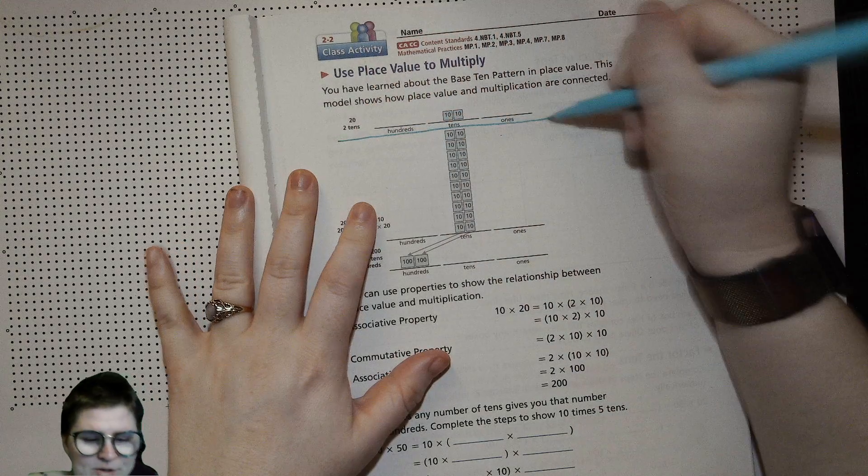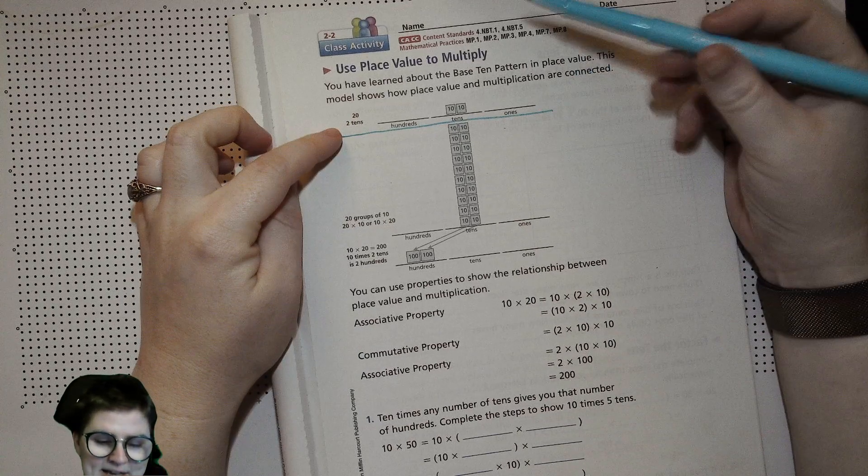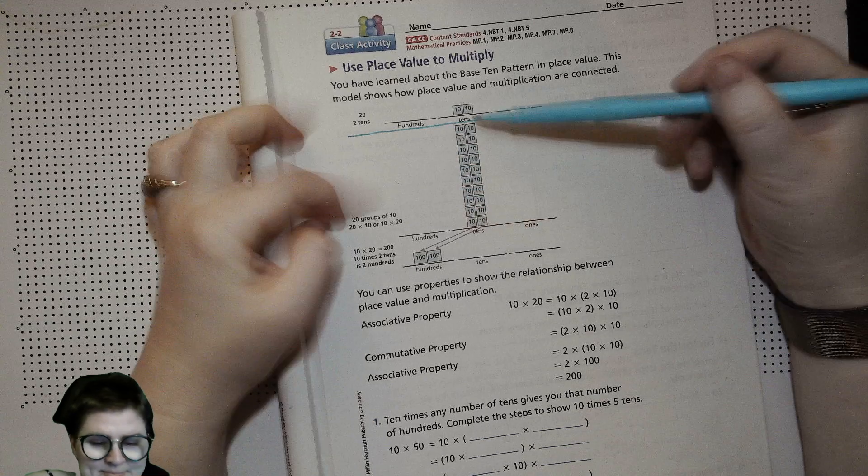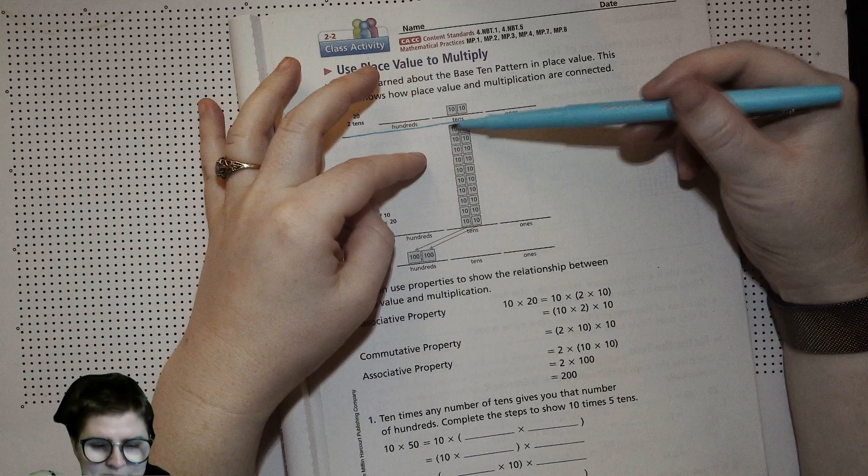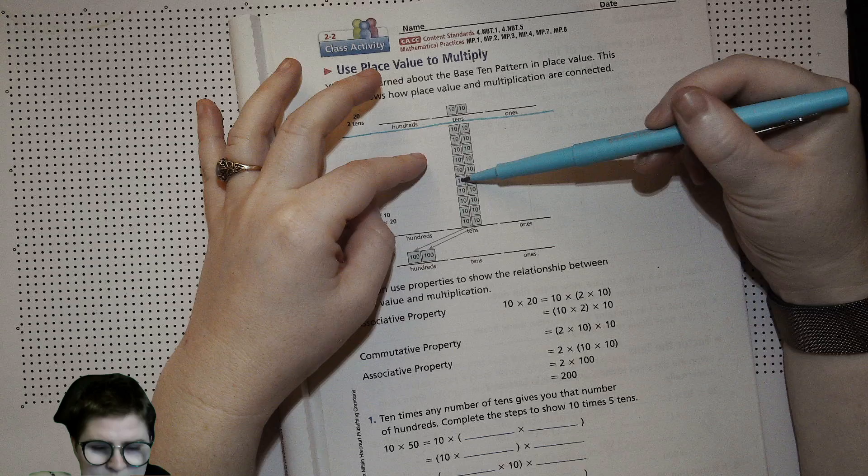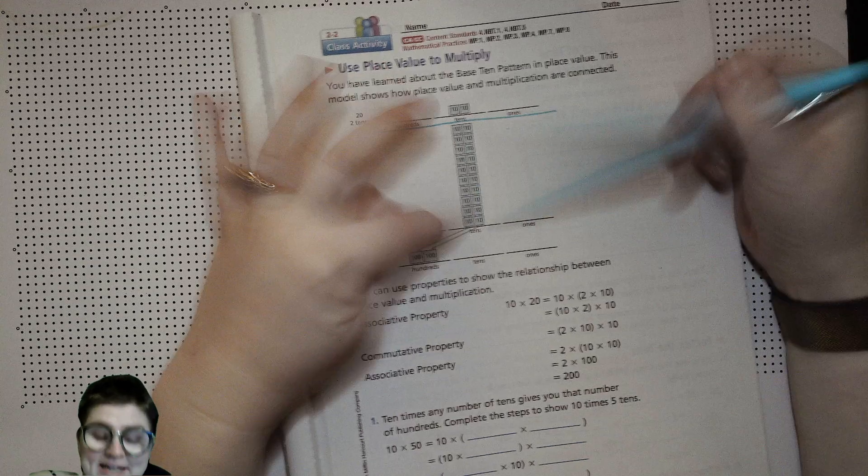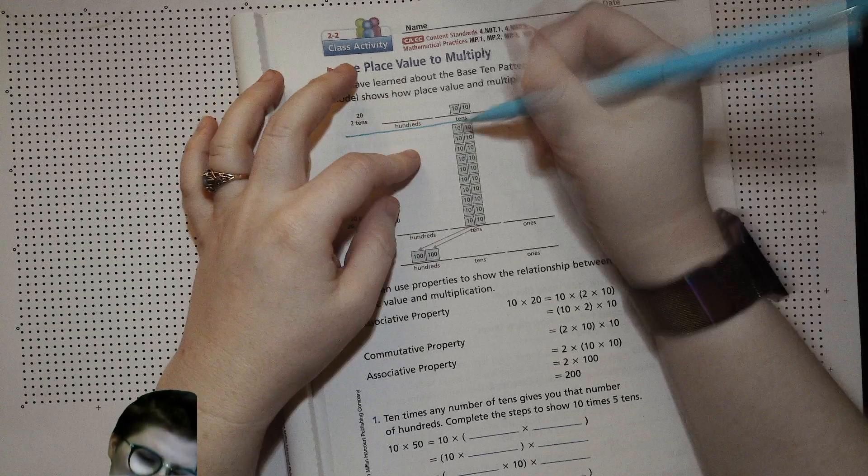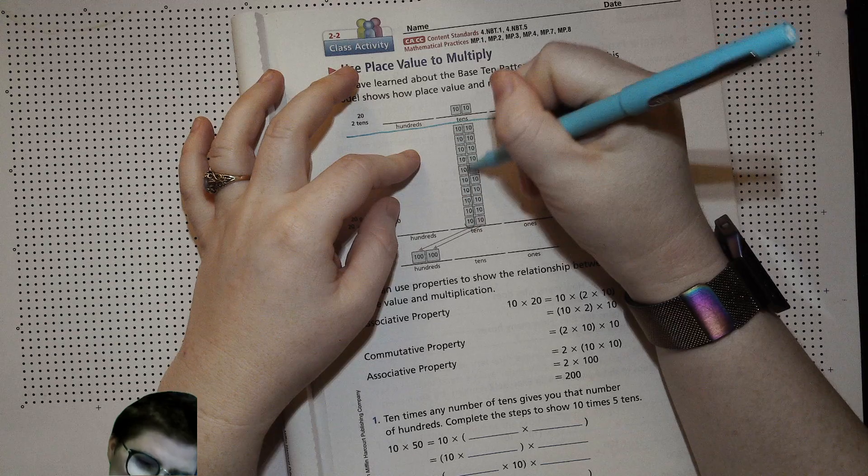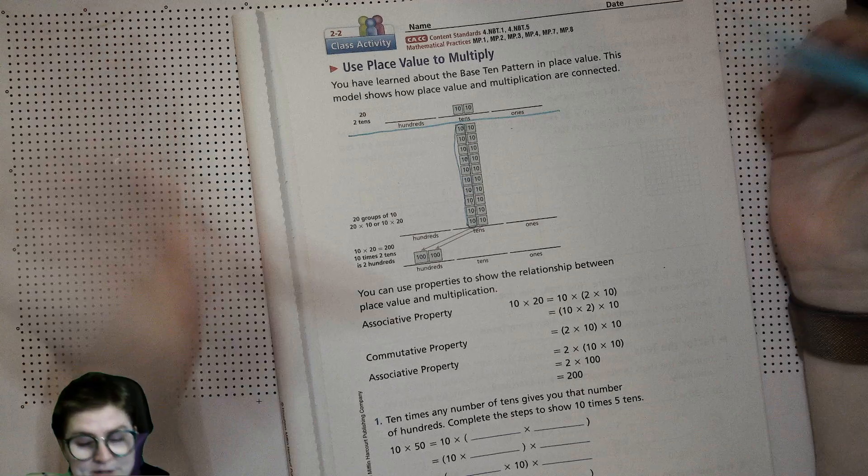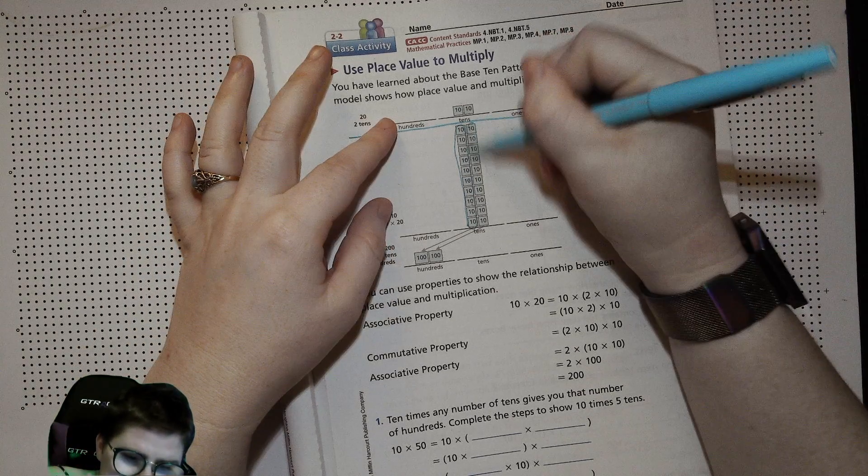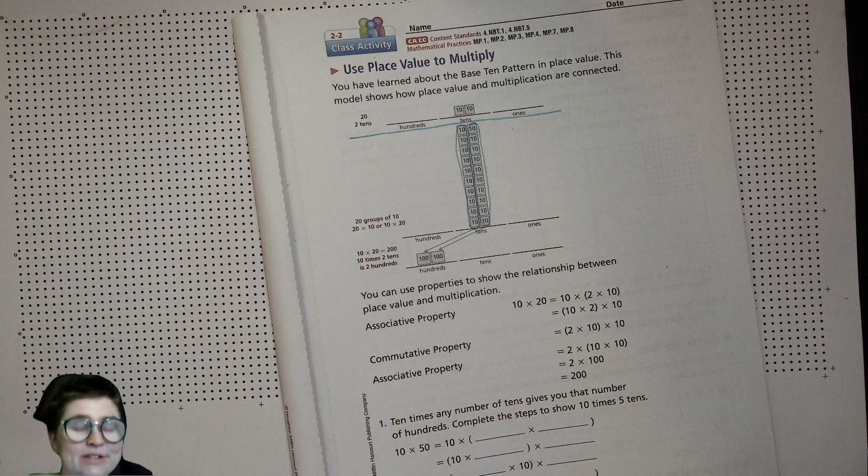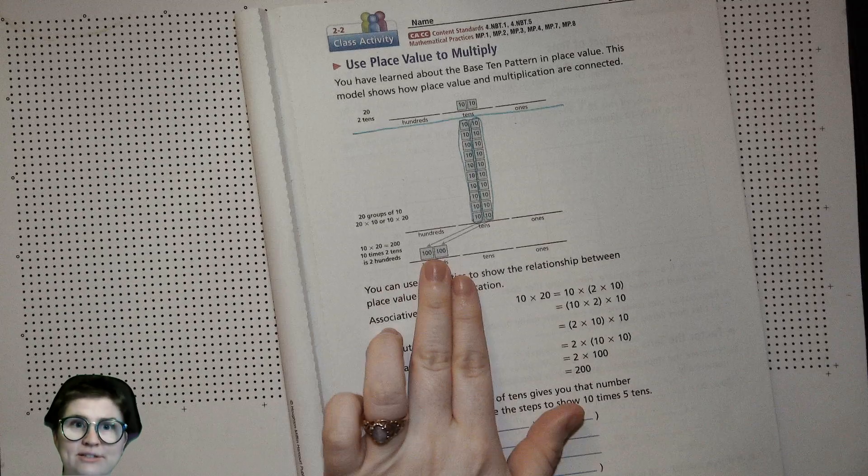Just how you can recognize the number 20 as 2 tens, you can also recognize 20 groups of 10 as 20 times 10. Because of that, you know 10 tens is 100, another 10 tens is also 100, so rather than thinking about this as 20 tens we can think about it as 2 hundreds.